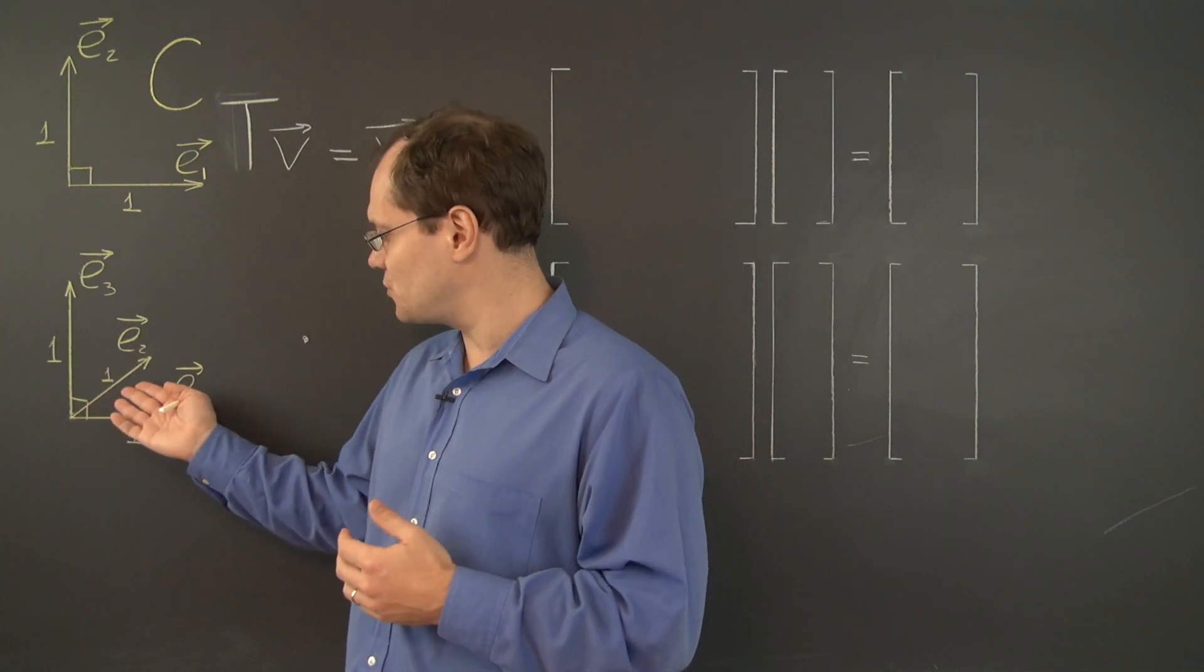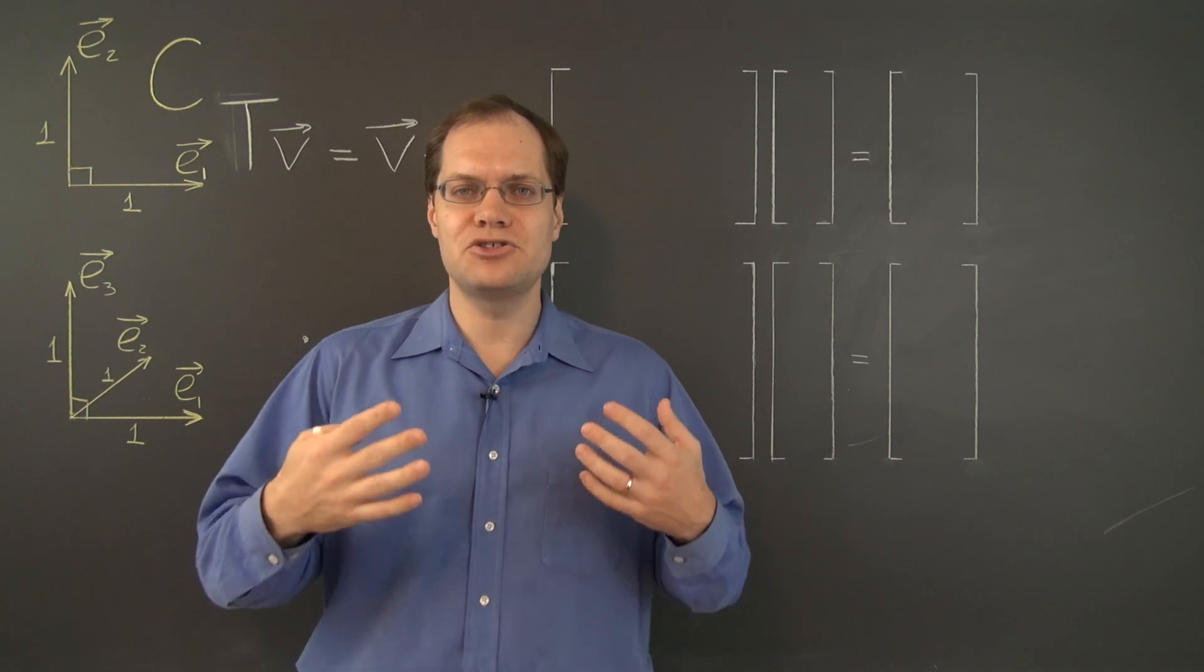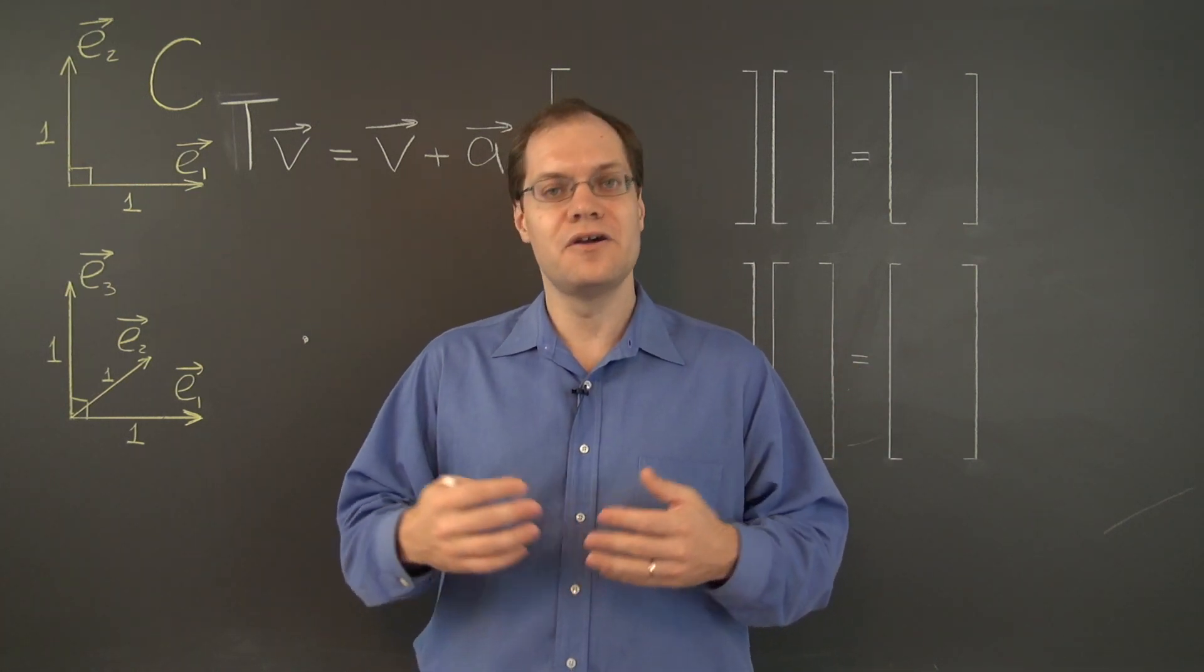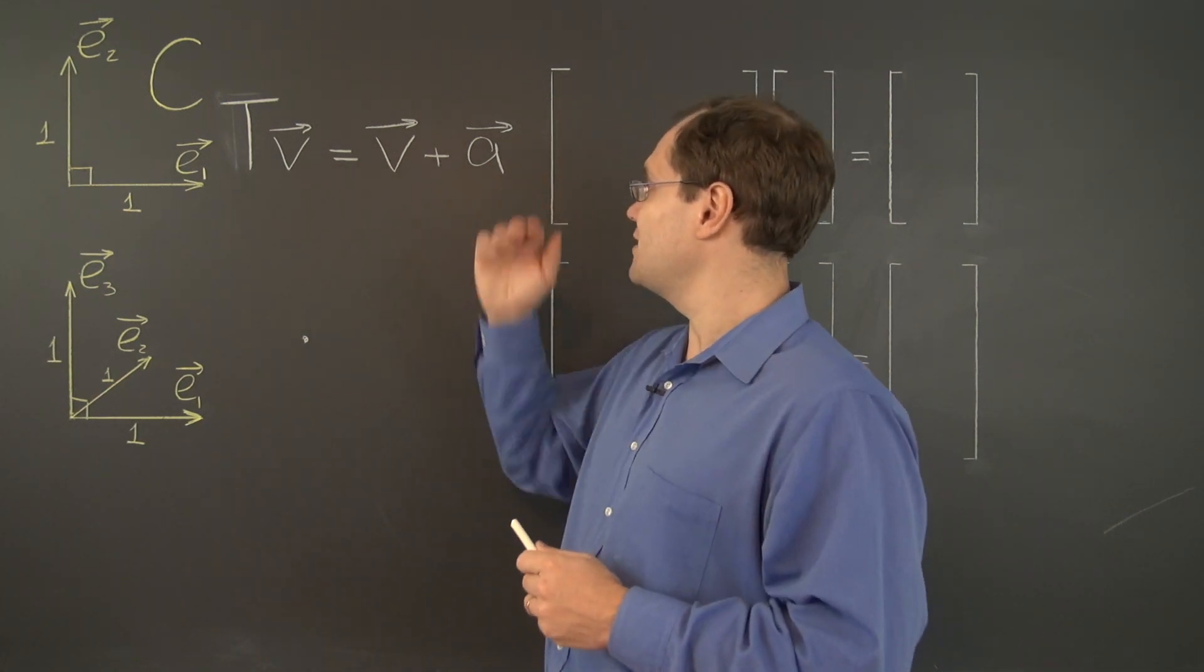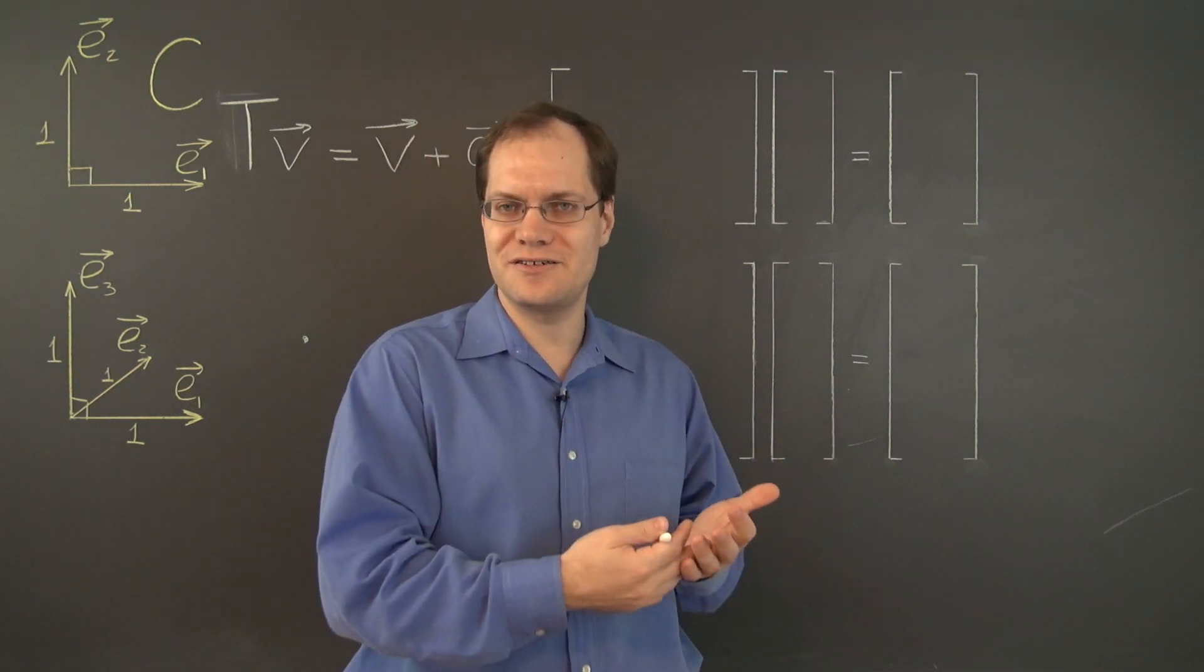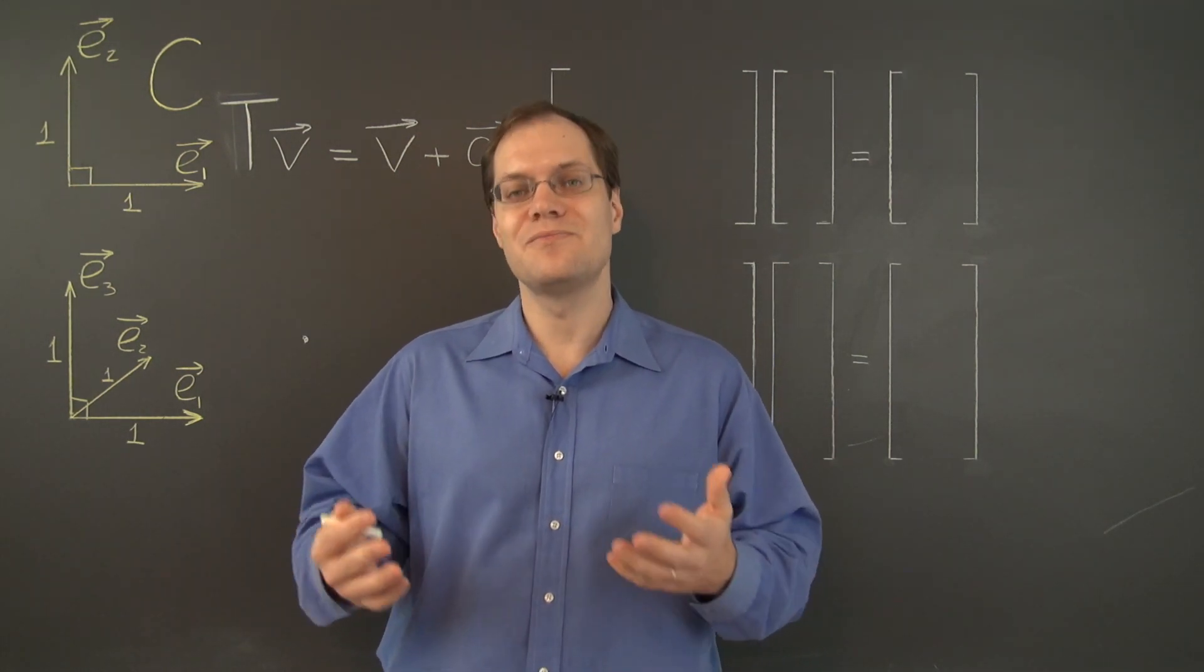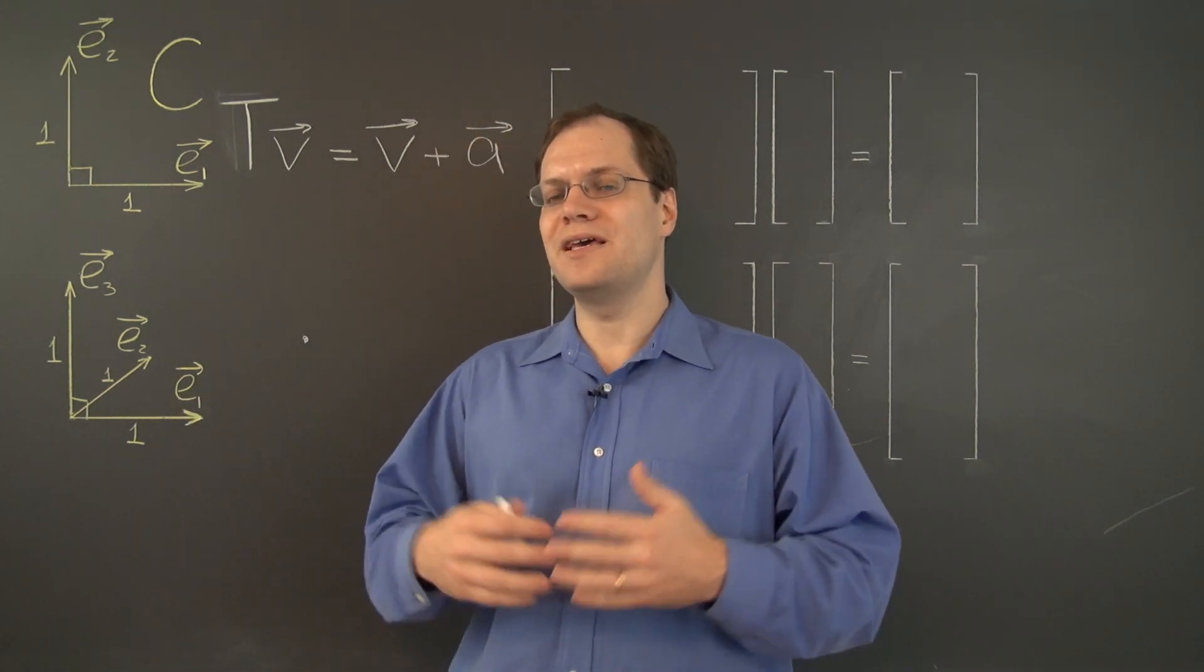Construct that matrix for this basis and any translation you want. And then see if that matrix really does represent translation. Try applying it to any vector and see if the answer is correct. Try applying it to the zero vector and see if you get the vector A in return. And of course you won't because any matrix times the zero vector is the zero vector. So it fails, it's not the matrix that you want, it's not the matrix that will represent translation with respect to this basis or any other basis. So is it hopeless?